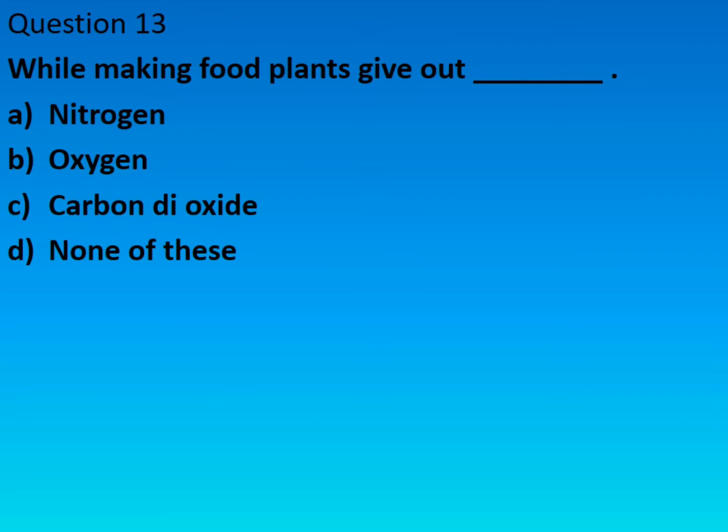Question number thirteen: while making food, plants give out dash — the right answer is option B: oxygen.